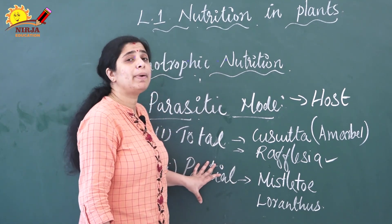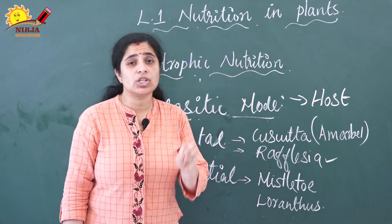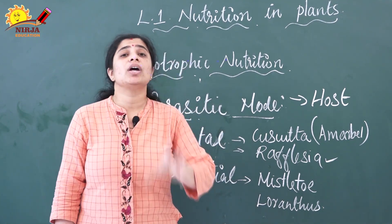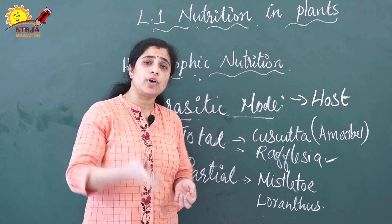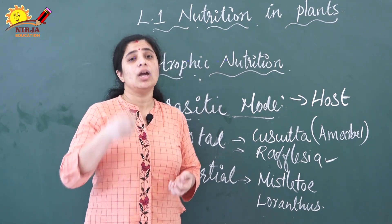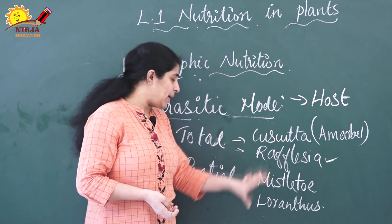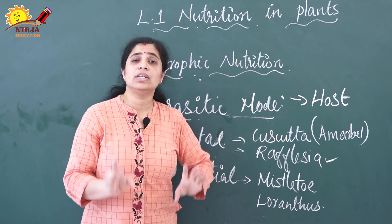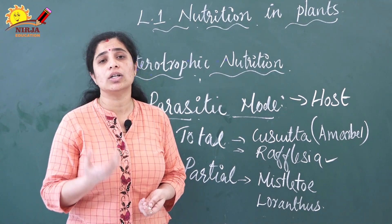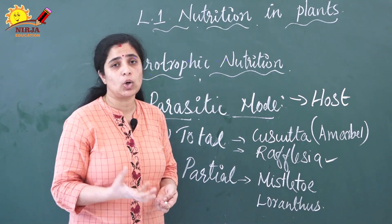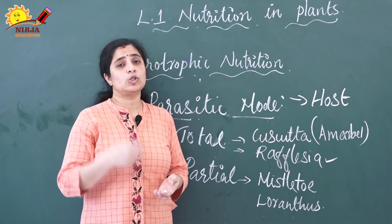Partial parasitic plants have roots that penetrate into the trunk of the host tree and derive water and minerals from it. Both total and partial parasitic plants destroy the host plants because they take all the nutrients from them.